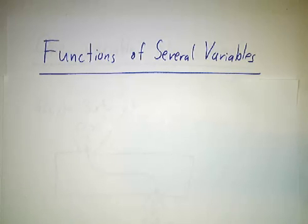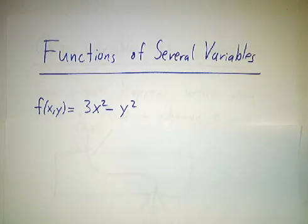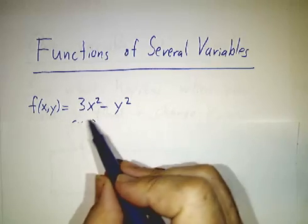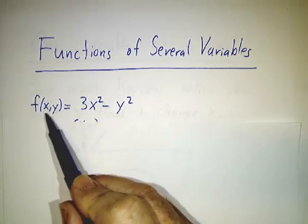I mentioned earlier that the input for a function could be anything. You could have f of Texas equals Austin, f of Denver equals Colorado, f of North Dakota equals Bismarck, if the function is state capital. In particular, it doesn't have to be a number, it can be a pair of numbers.